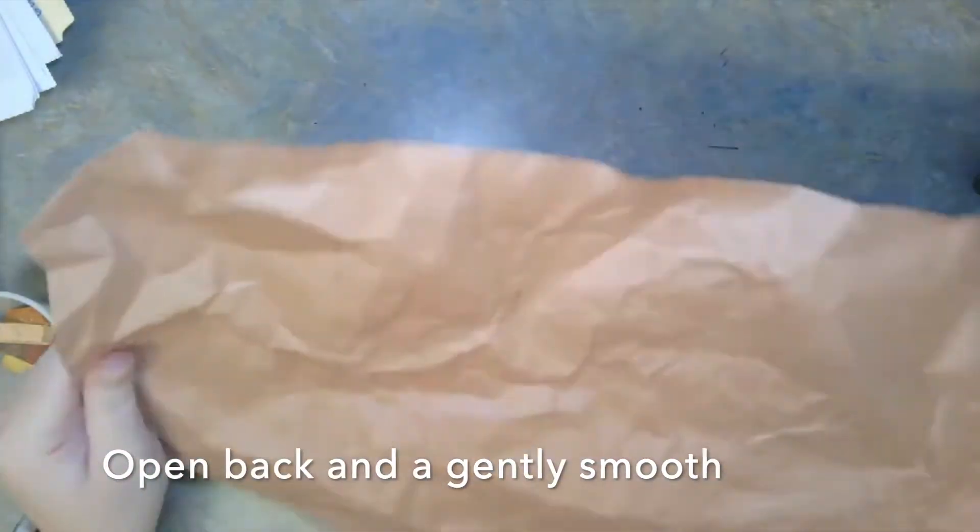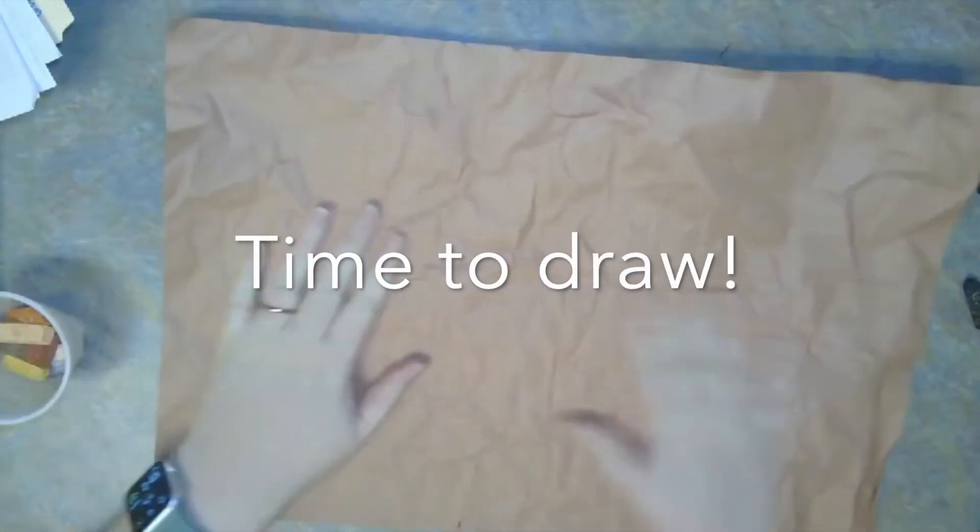The cavemen had texture in their drawings by painting on cave walls. We're going to simulate texture by crumbling our paper up into a ball and then smoothing it back out.